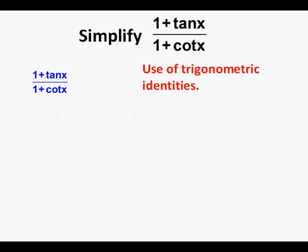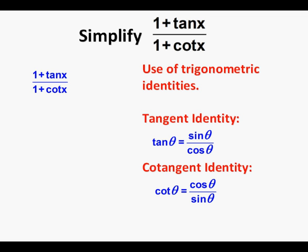First, we'll look at solving algebraically. Starting out with 1 plus tangent x over 1 plus cotangent x, we'll expand by the use of two related trigonometric identities. We'll use the tangent identity: tangent theta equals sine theta over cosine theta. And we'll use the related cotangent identity, which is cotangent of theta equals cosine of theta over sine of theta.